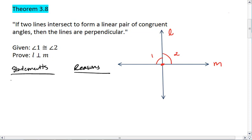So first, we know angle 1 is congruent to angle 2, and that's a given. We also know that angle 1 and angle 2 are a linear pair, and that's given by the drawing.